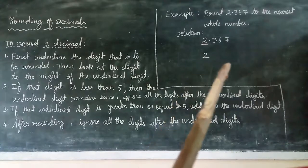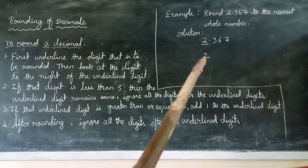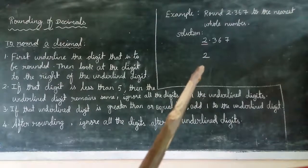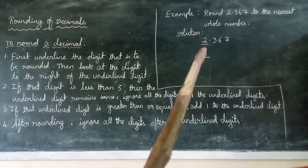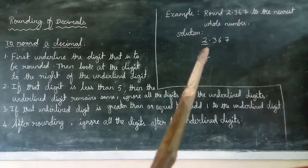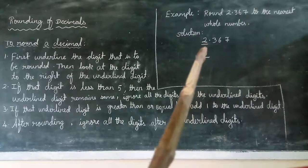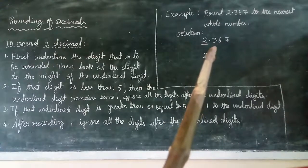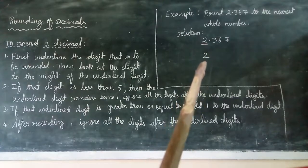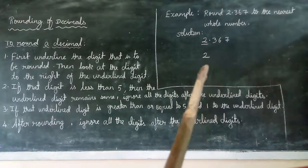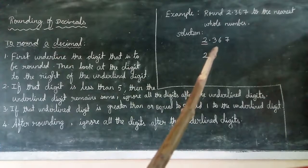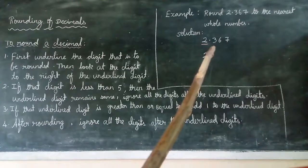So for 2.367 rounded to the nearest whole number: underline the ones digit 2. The right-side digit is 3, which is less than 5, so the underlined digit remains the same. Remove all digits after the underlined digit. The answer is 2. If the right-side digit is less than 5, the underlined digit stays the same; if greater than 5, we add 1.